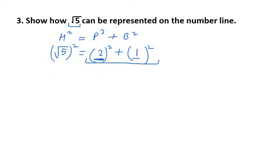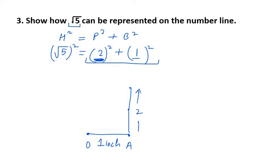Now we draw this on a number line. OA will be the base of 1 unit. As the perpendicular, we take 2 units. The hypotenuse OB will then equal √5.